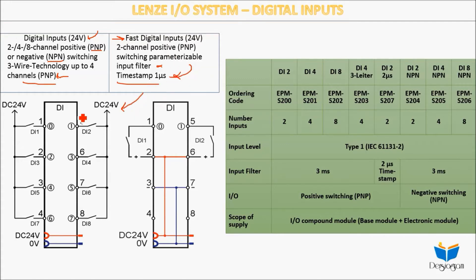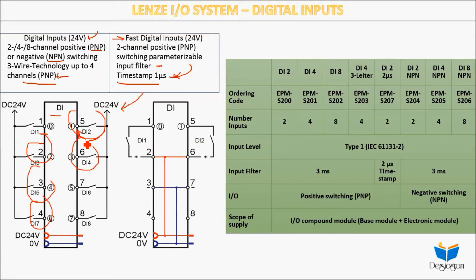Now you can see here the digital input module with 24 volt supply. We are giving 24 volt to our digital input — this is the PNP connection mode. Digital inputs one through eight are shown here as the connection of the digital input. You can also see the 24 volt DC and zero volt DC power supply for this module.